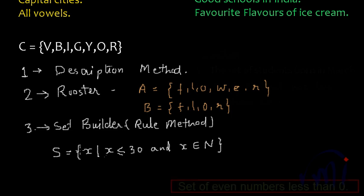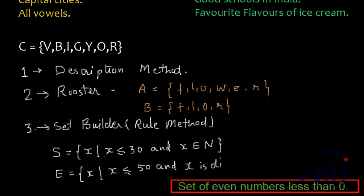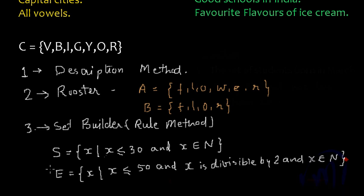Similarly, if I want to define a set of even numbers which are less than 50, I represent it as: E = {X | X ≤ 50, X is divisible by 2, and X ∈ ℕ}. This will list all the even numbers less than 50. In the next few videos we will be coming across lots of sets using these methods. In the next video we will discuss different types of sets and the operations which we can perform on sets. Keep watching MathSmart — bye bye!